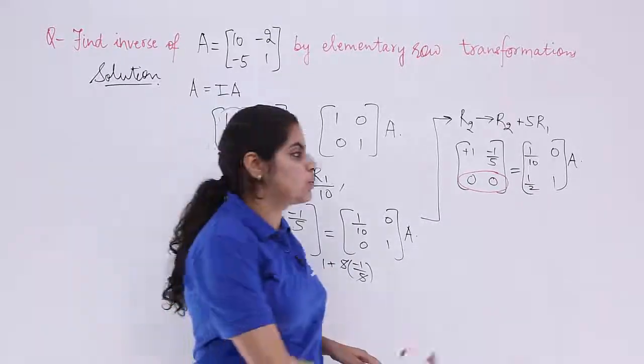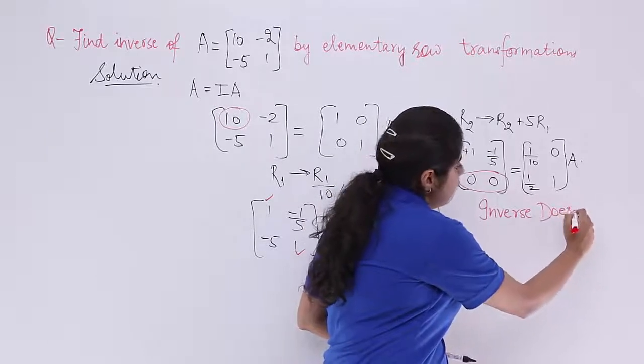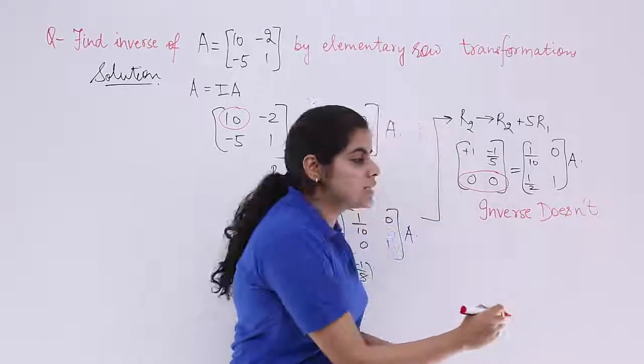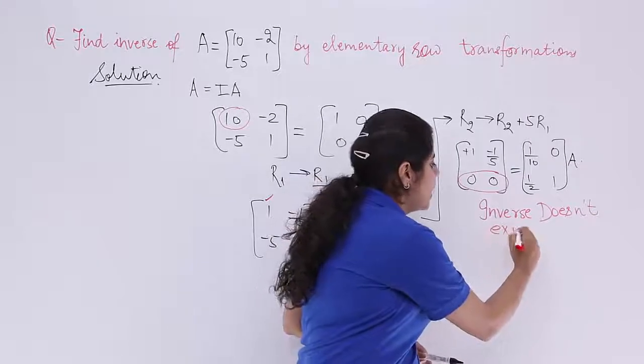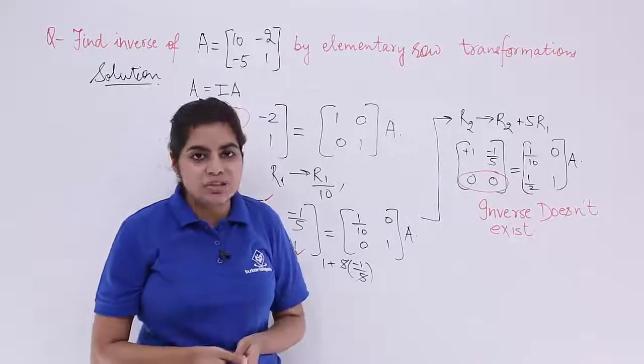There is no answer to this question. So the answer would be written as inverse does not exist. Why are we writing this? Because I know that the R2 has become 0 and so finding inverse to this question is not possible.